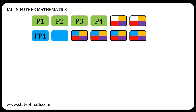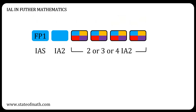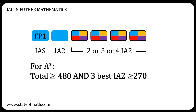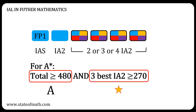For two IALs, the first one — the IAL in mathematics — is handled as we explained before. For the IAL in further mathematics, you will have a total of three, four, or five IA2 units, one of them being compulsory and the rest being optional. To receive an A-star, the total UMS must be at least 480, and the total of the three best IA2 units must be at least 270. You can think of this as two conditions: one for the A and one for the star.